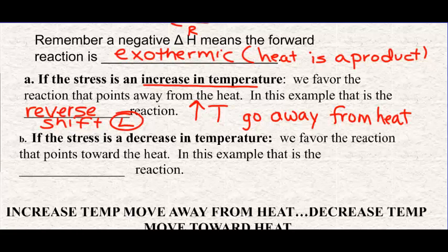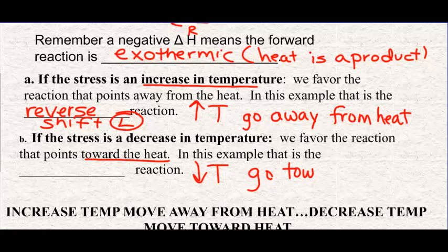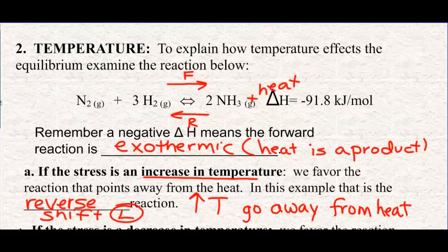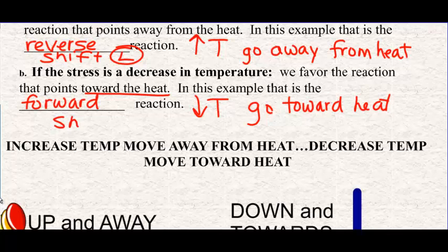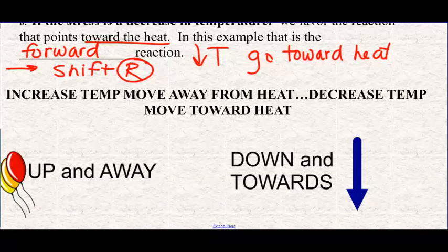If you decrease temperature, you go toward heat. So if you decrease T, you go toward heat — just like concentration: up and away, down and towards. In this example, if you were to decrease the temperature, you would go toward heat, which is the forward reaction, and we would say you are shifting to the right. Favoring the forward reaction just means the forward reaction can work faster for a short amount of time. General rule: if the stress is increased temp, you go away from heat; if the stress is decreased temp, you go toward heat. Same idea as concentration — really nothing new except you deal with heat instead of what you're increasing or decreasing.